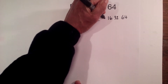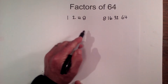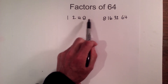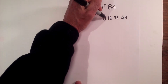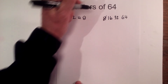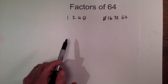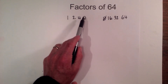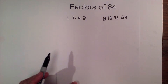It's 8 times 8, so I'll write an 8 here. Now I can tell there are no numbers between 8 and 8, so I've found all the factors. I'll cross out the duplicate so I don't write it twice. The factors of 64 are: 1, 2, 4, 8, 16, 32, and 64.